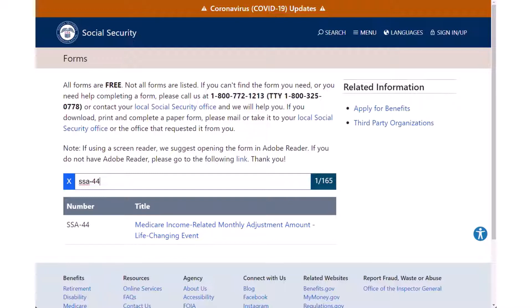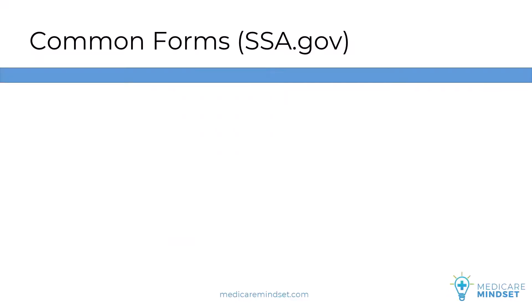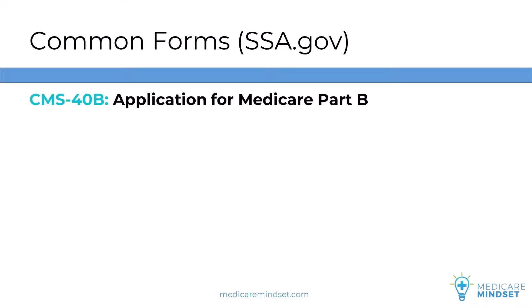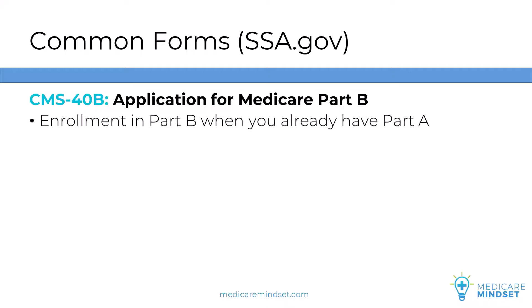Now let's get into the most common forms we deal with on a regular basis for our Medicare clients. Form CMS-40B is the application for Medicare Part B. This would only be required if you already have Part A and need to add Part B — this could be before age 65 due to disability, or after age 65.